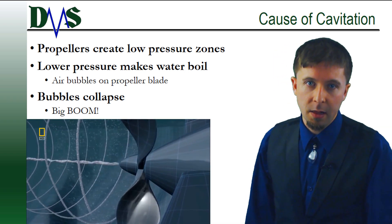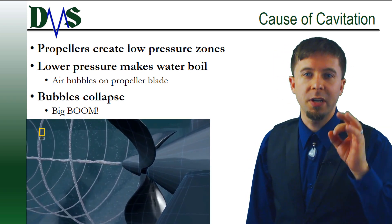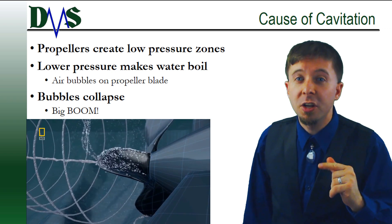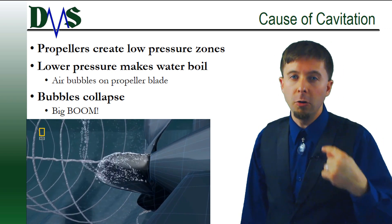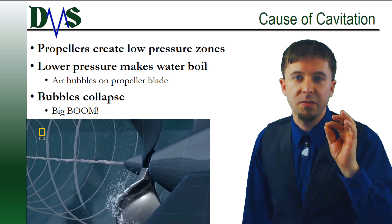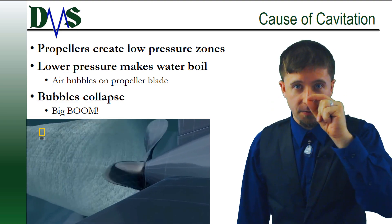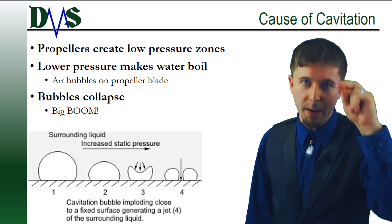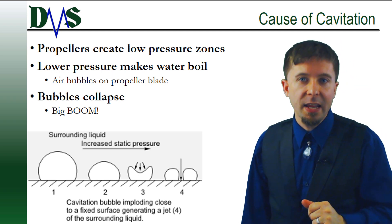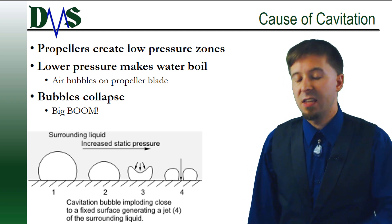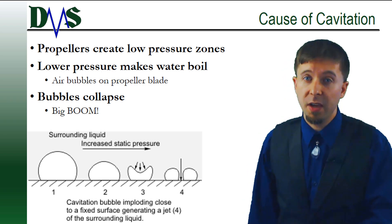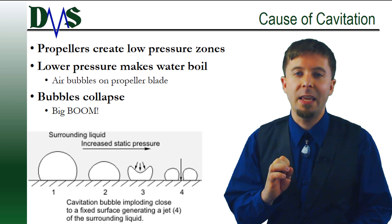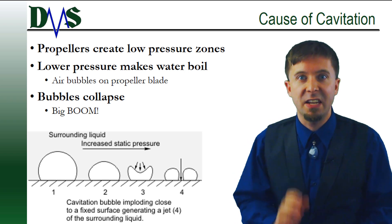Propellers, incidentally, lower that water pressure intentionally. They do this to generate lift. The catch is, lower the water pressure too much and the water can boil at ocean temperatures. It'll create thousands of tiny little air bubbles that form against the surface of the propeller blade. But these bubbles don't last very long, and when they collapse, it works like a tiny explosion against the propeller blade. If your propeller has major cavitation, it has to endure the equivalent of thousands of tiny micromines exploding every minute of its life.